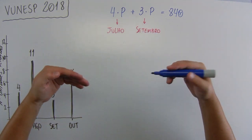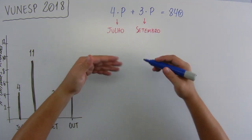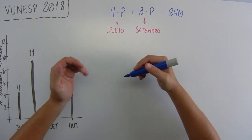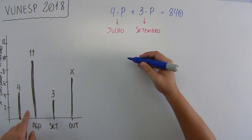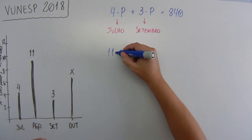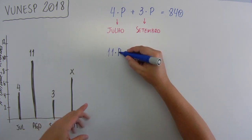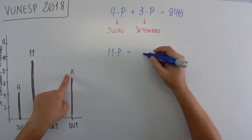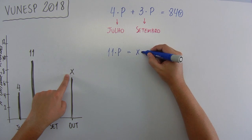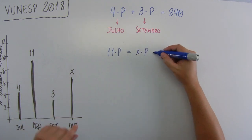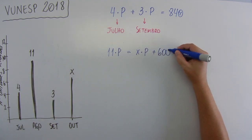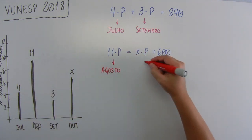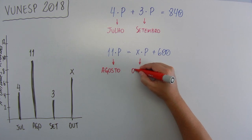Vamos continuar lendo porque tem mais dado. E que o valor arrecadado com as vendas de agosto foi 600 reais a mais do que o valor arrecadado com as vendas de outubro. Agosto, 11 vezes o produto, é igual ao valor de outubro, X vezes o produto, mais 600 reais. Aqui é agosto e aqui outubro.